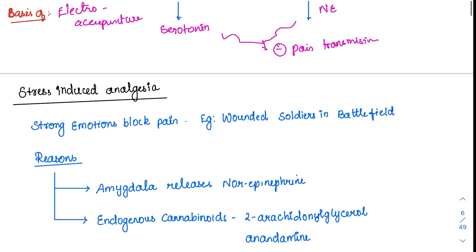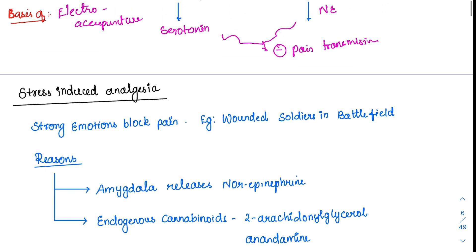Another supra-spinal mechanism is stress-induced analgesia. In severe stress, a person does not feel pain. Even in war, soldiers with severe injuries continue fighting because they do not feel pain at that moment — though they feel it once the stress subsides. Strong emotions and motivation can suppress pain entirely.